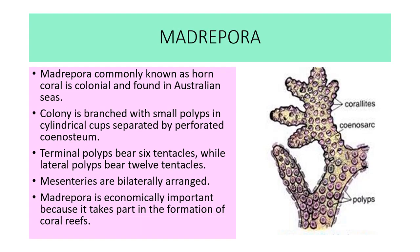Next example is Madrepora, commonly known as horn coral. It is colonial, found in Australian seas. The colony is branched with small polyps in cylindrical cups separated by perforated coenosteum. Terminal polyps bear six end tentacles, while lateral polyps bear 12 tentacles. Mesenteries are bilaterally arranged. Madrepora is economically important because it plays a part in the formation of coral reefs.